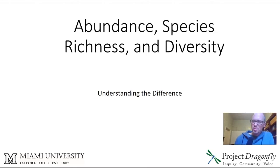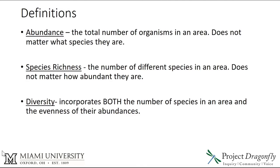Let's talk about abundance, species richness, and diversity, and why understanding the difference between these terms is important. Abundance is the total number of organisms or individuals in an area — it does not matter what species they are. Species richness is the number of different species in an area, and it does not matter how abundant they are. Diversity incorporates both the number of species in an area and the evenness of their abundances.